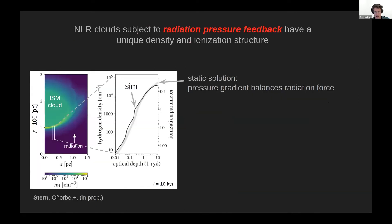I'll focus now on the radiation pressure feedback case. One interesting result from these simulations is that the surface layer of the cloud — the layer that dominates emission from ionized gas — converges onto a static solution, where the gas pressure gradient within the surface layer balances the force coming from the radiation pressure.